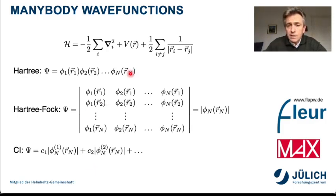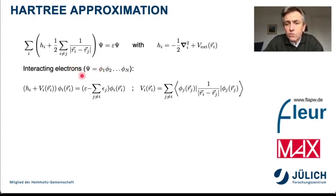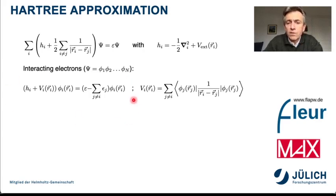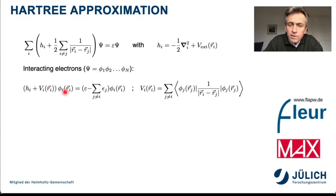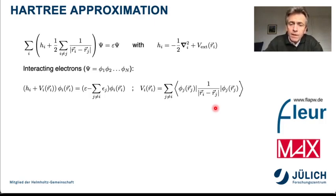Let's first look at the Hartree approximation. I write the many-body Schrödinger equation into a local term H_i and the electron-electron interaction term. If I insert my product wave function, I arrive at a complicated system of coupled differential equations which individually look like a single-particle Schrödinger equation, but for every wave function I have a different potential that arises from all the electrons except the one electron I actually want to describe.